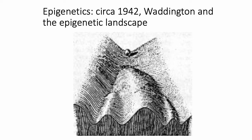Waddington didn't think these two competing camps were mutually exclusive. He built a model that incorporated both ideas, known as the epigenetic landscape, which was his model of how cells decide their fate. His idea was that you could represent a pluripotent cell as a marble that rolls down a hill, where the different valleys represent barriers to switching cell fate once you've committed to something.